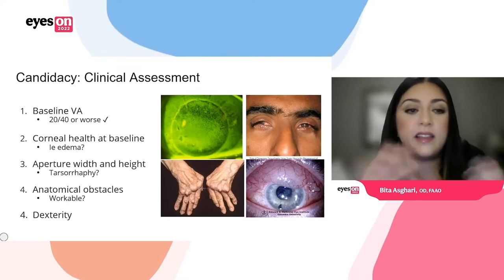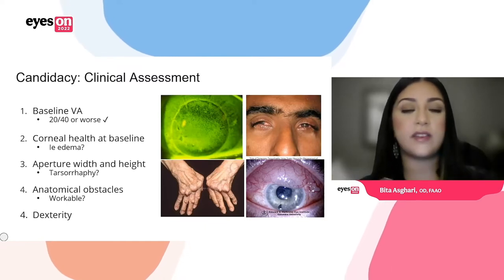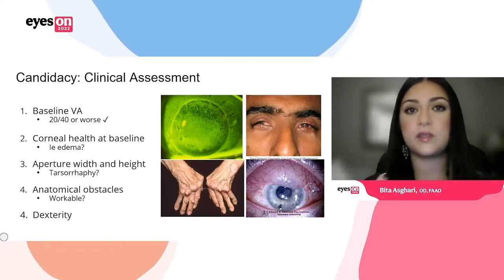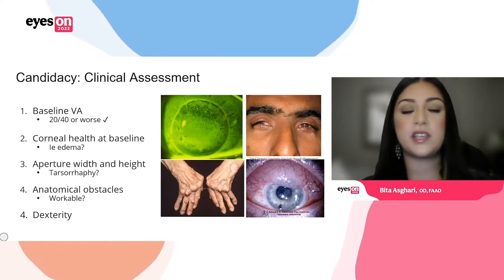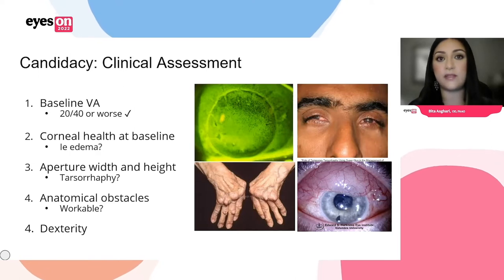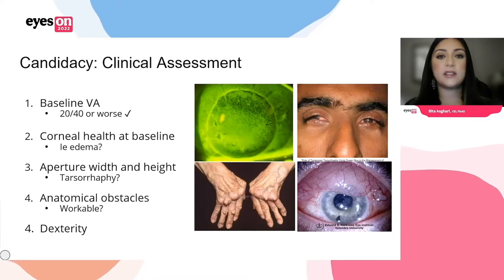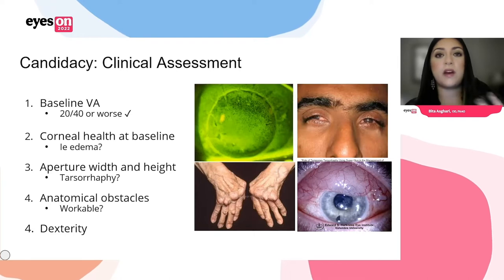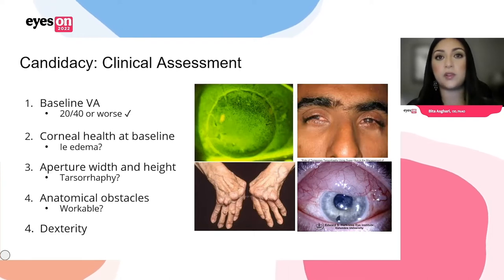The aperture width, height, and lid anatomy in general are obvious limitations to consider. Some anatomical challenges are workable — you can still get lenses in — others not. Anatomical obstacles like a large bleb on the conjunctiva overlapping the limbus are obviously going to be a limiting factor and make the patient a non-candidate. Dexterity is a gray area as well, because even if a patient can't apply and remove the lenses themselves, they may have a live-in relative or friend or other means to make it work.